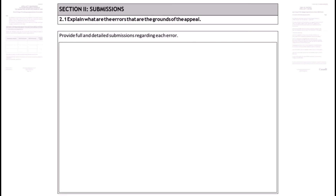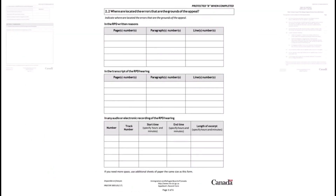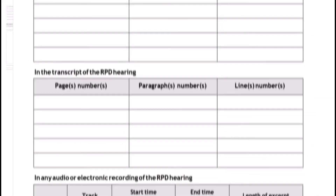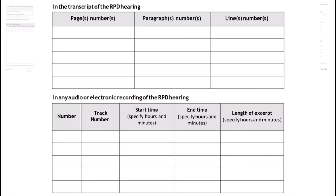In section 2.2, you need to indicate exactly where the mistakes can be found in the RPD written reasons. You have to indicate the page number, the paragraph number, and the line where each mistake can be found.